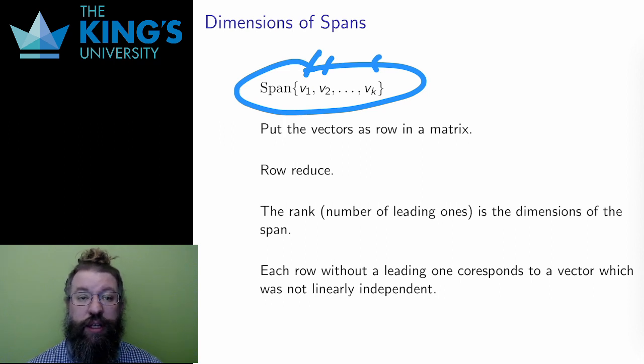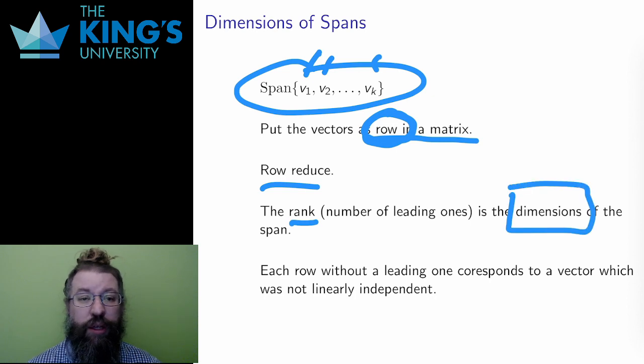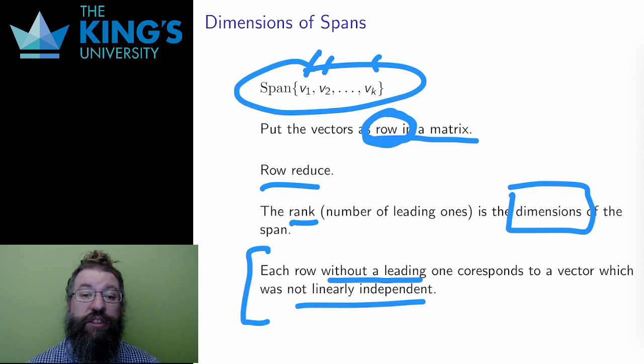I take the spanning vectors and input them as rows in a matrix. Be careful, even though the vectors here are written in columns, they need to be switched and inputted as rows, not as columns, into a matrix. Then I row reduce. The rank of the resulting matrix, the number of leading ones, will be the dimension of the span. Each row that turns into a row of all zeros came from a redundant vector. I just need to row reduce and count. Since the row reductions can be done by computer, this is a pretty efficient thing to do.